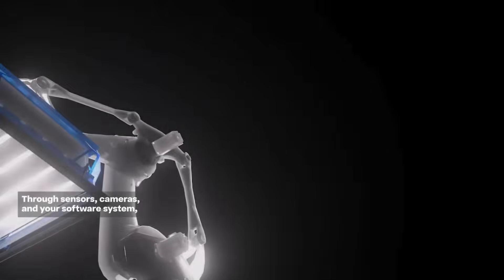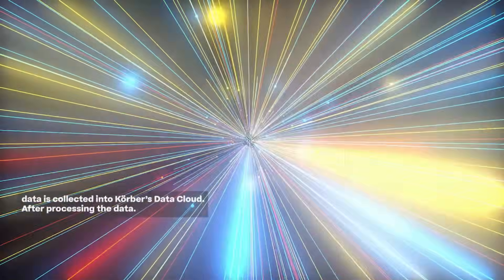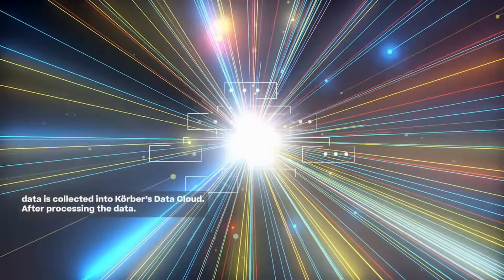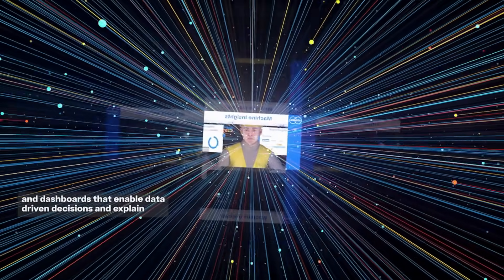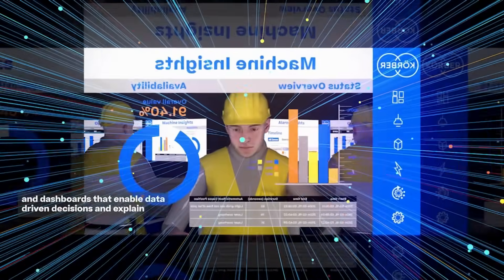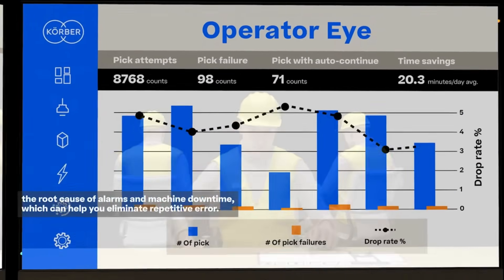Through sensors, cameras, and your software system, data is collected into Korber's data cloud. After processing the data, the solution easily presents relevant insights through reports and dashboards that enable data-driven decisions and explain the root cause of alarms and machine downtime, which can help you eliminate repetitive errors.